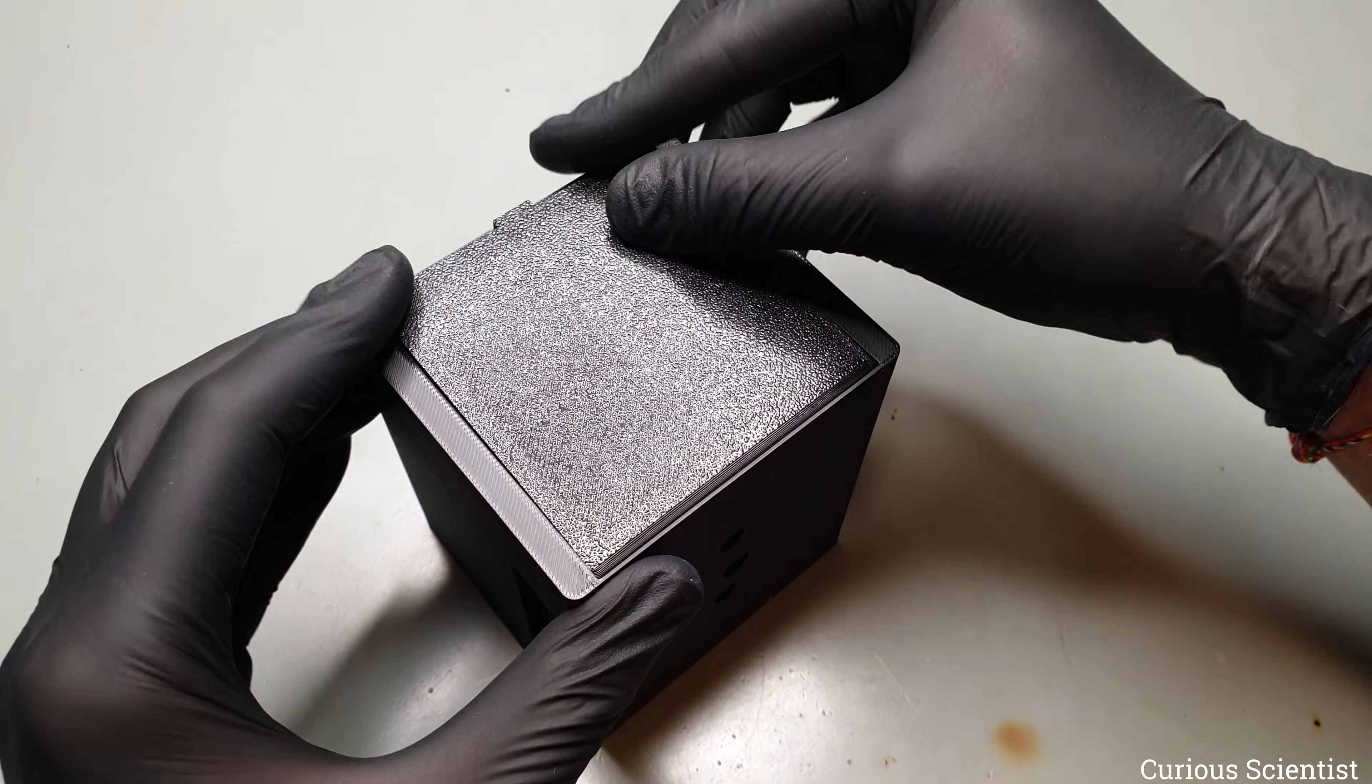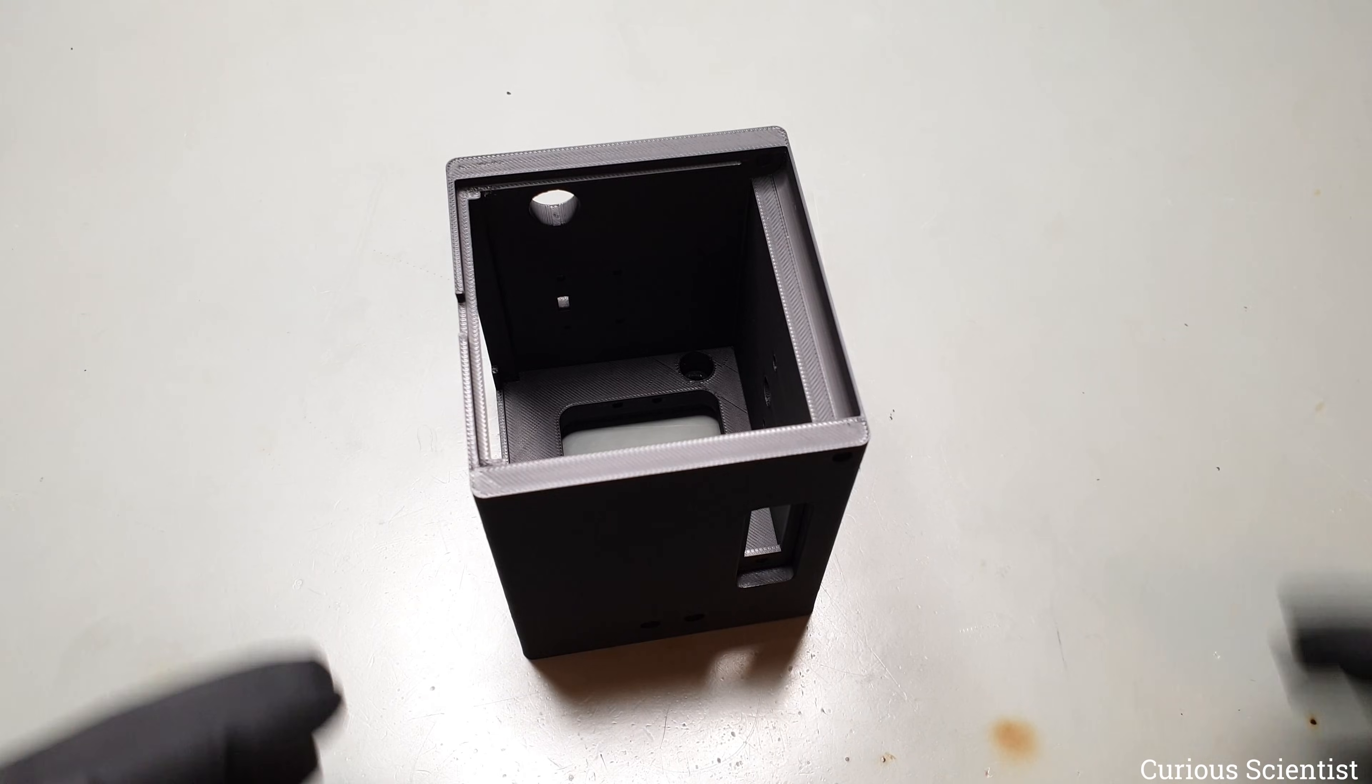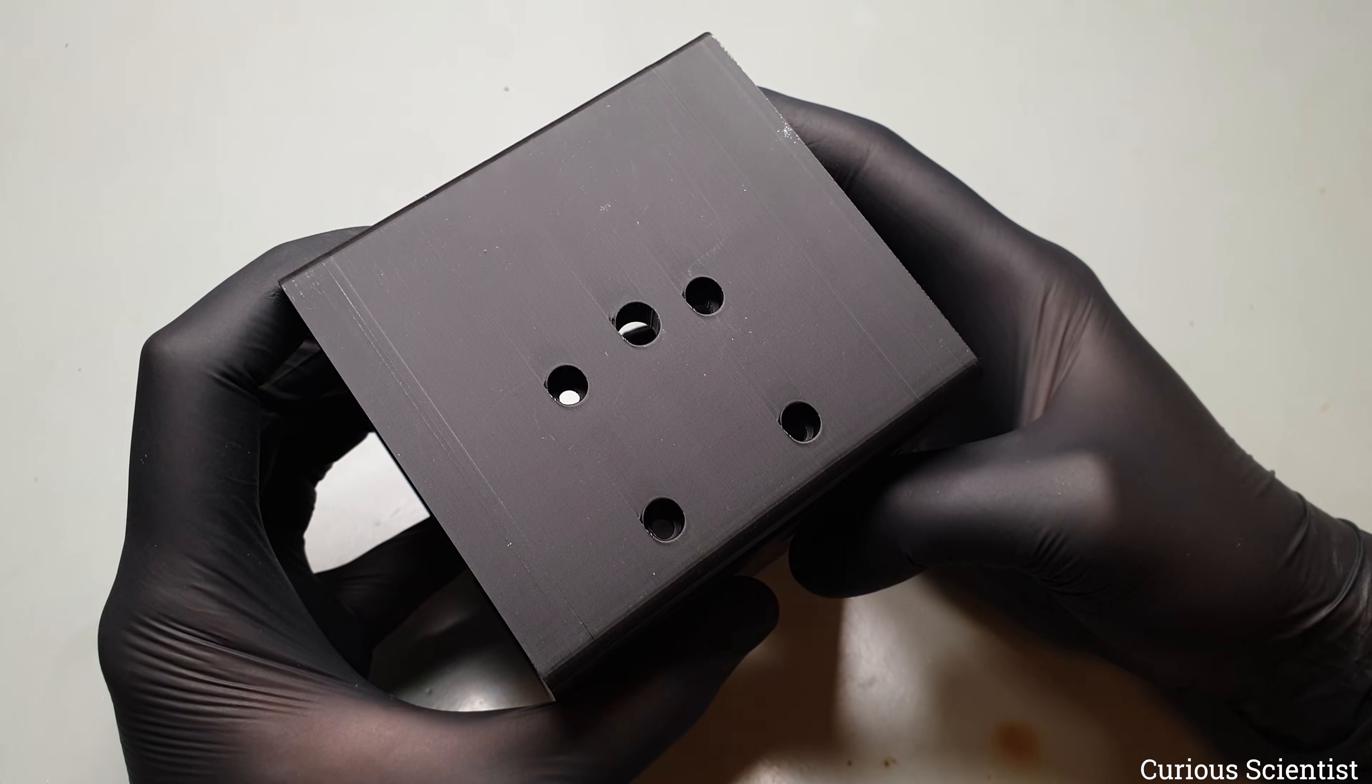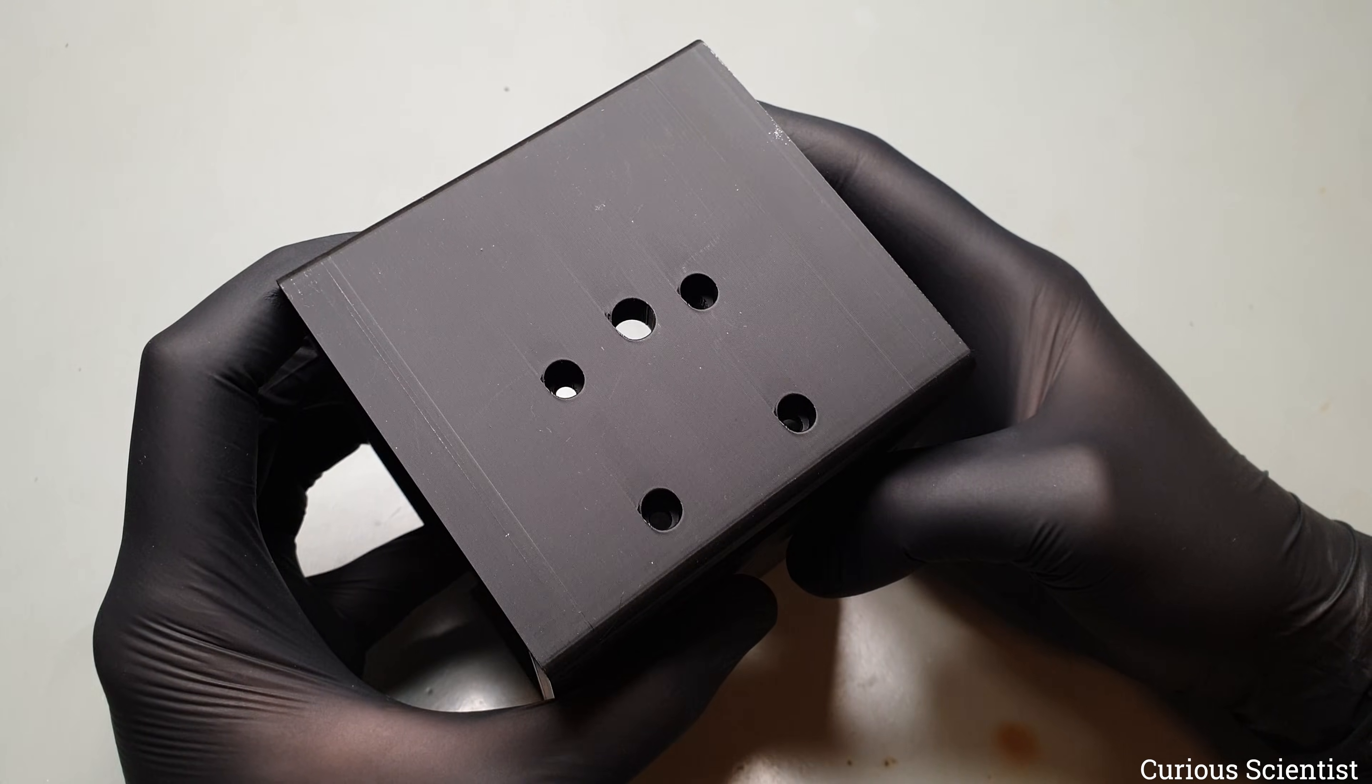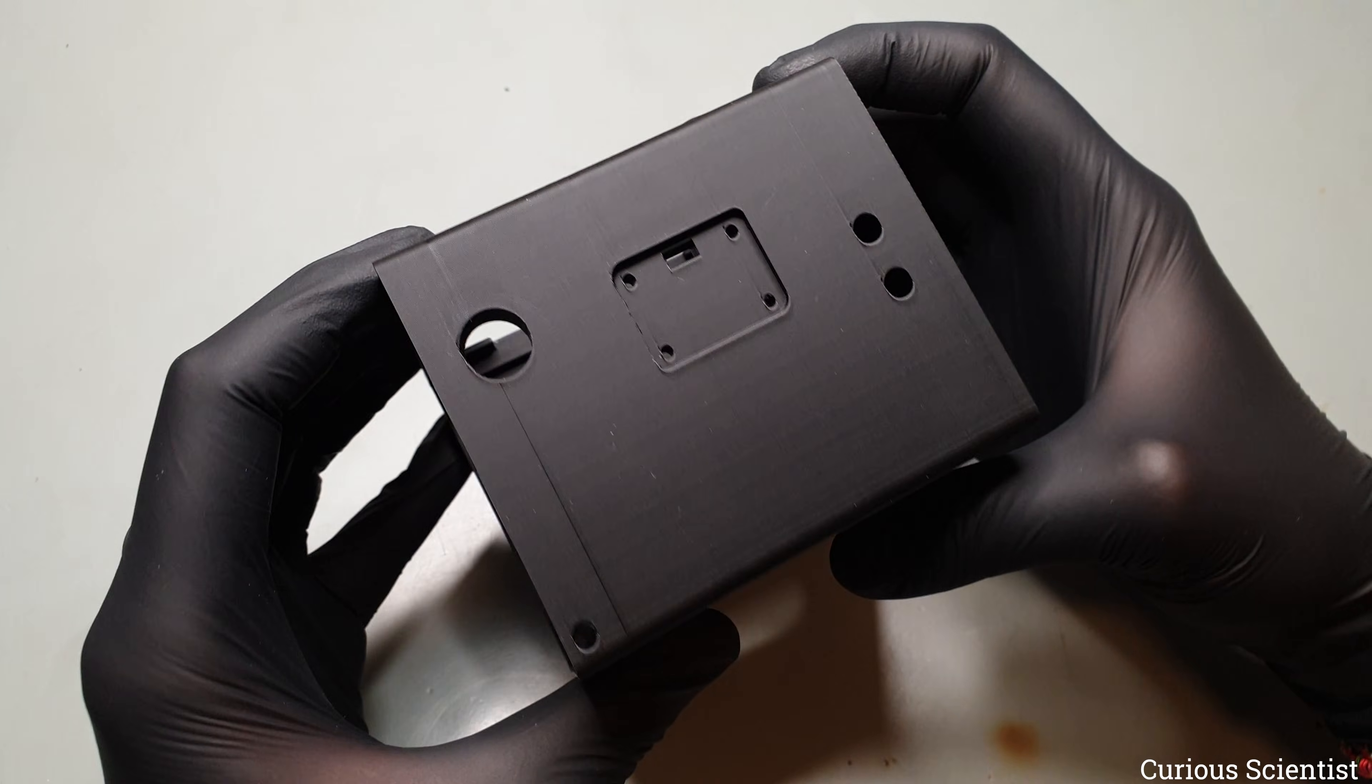The door receives two brass insert nuts, one on each side, and it can fully open. On the bottom side, there are five holes. Four of them are used to attach the camera's processor module to the housing, and the fifth one, in the center, receives a ¼ inch brass insert nut so the camera can be mounted on a tripod.